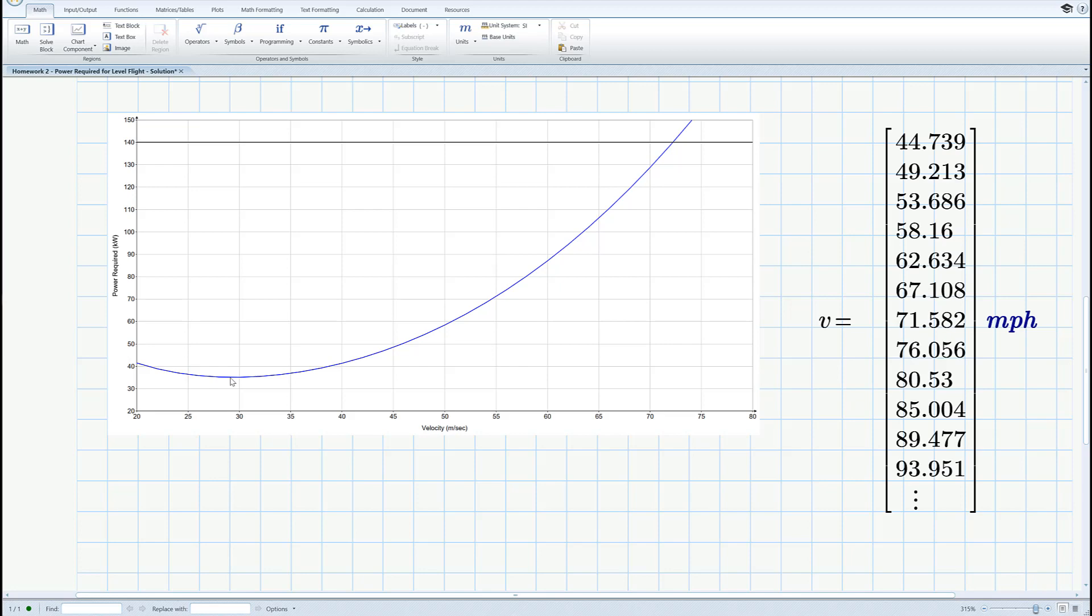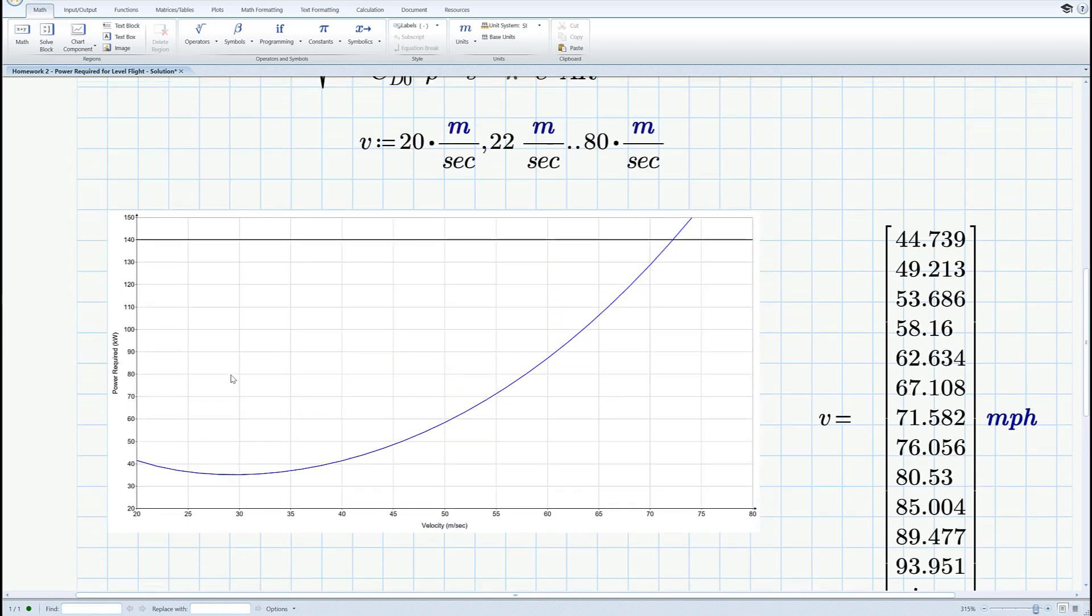Or if you want to maximize the climb rate you want to maximize the amount of power you have left over from that required to fly. Well that happens right here. Given the numbers I have here the maximum predicted climb rate would happen at 29 meters a second because that's the speed at which there's the most power left over from the engine. So this is a pretty simple calculation and the curve is easy to interpret. So I hope this helps, we'll talk to you next time.